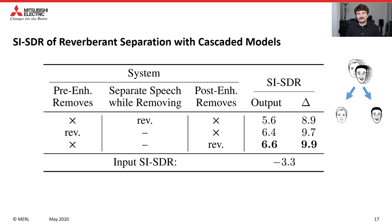Here are the results of the cascaded models on reverberant separation. The baseline in the first row removes reverberation as part of separation. We also evaluate removing reverberation before separation as well as removing reverberation after separation. We find that removing reverberation after separation is the best performing configuration, because the network only has to deal with one impulse response at a time.